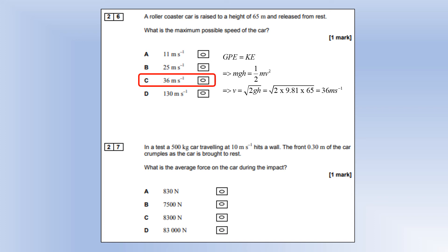In a test, a 500 kilo car is traveling at 10 meters per second and it hits a wall. The front 0.30 meters of the car crumples as the car is brought to rest. What is the average force? First, I worked out how much kinetic energy the object has. If it's brought to a stop, we must have done work equal to that. We've done that over a distance of 0.3 meters. So that gives us this force, which is D.